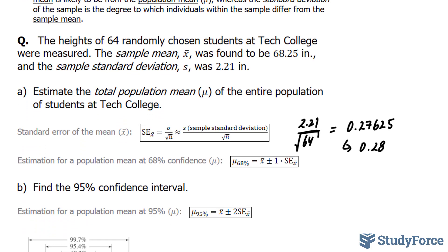So we just found the standard error, and we know the average of the sample is 68.25. 68.25 plus 0.28 times 1 and 68.25 minus 0.28. You always multiply the standard error by 1 if you're looking for the 68% confidence. In question B, I'll show you what to do with the 95% confidence.